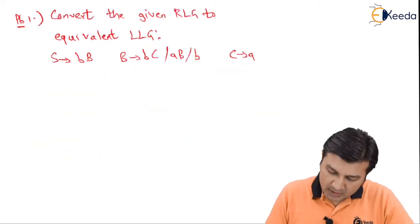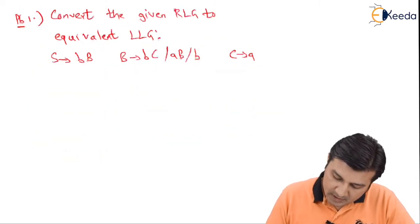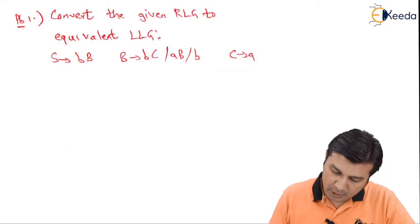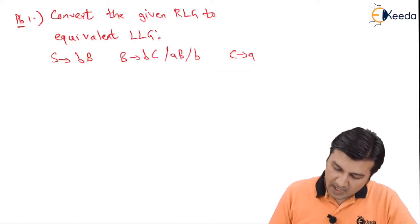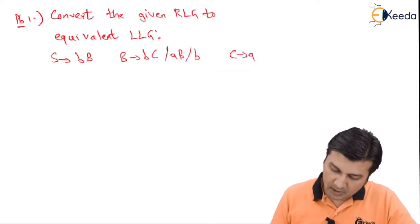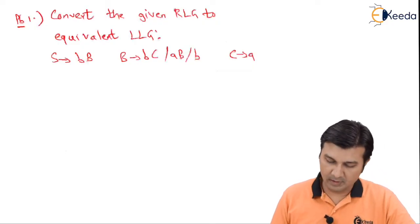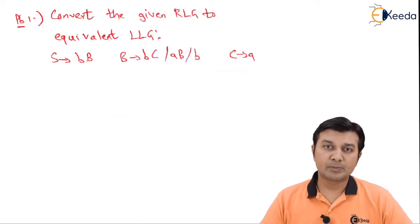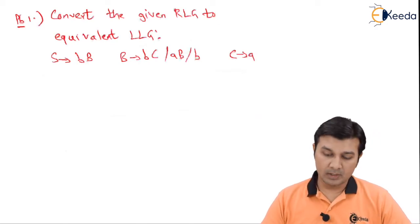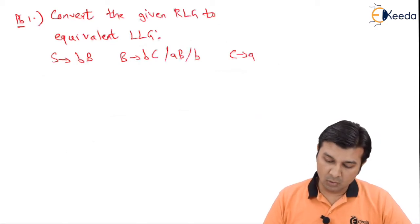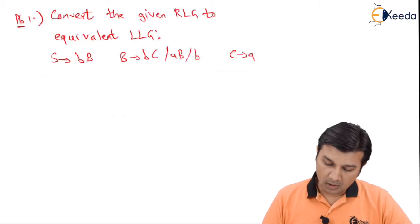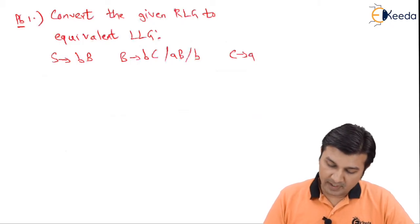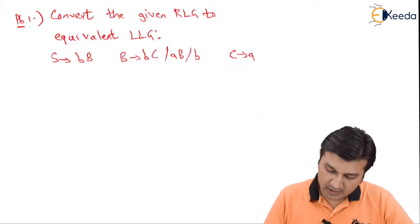The question over here says: convert the given RLG into equivalent LLG, and the following are the productions which are given. As per step 1, we are expected to convert this into an equivalent finite automata.